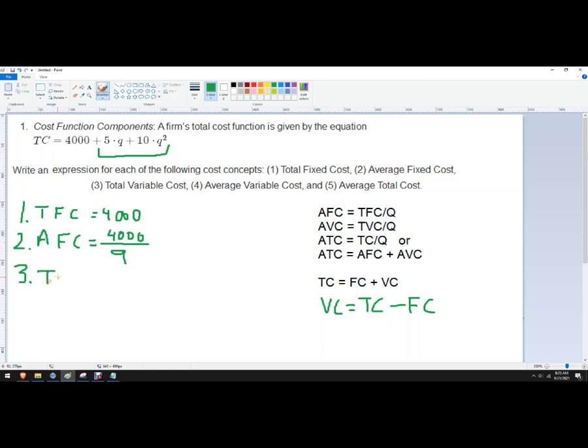So total variable cost is just going to eliminate that part. So it would just be 5Q plus 10Q squared.